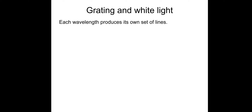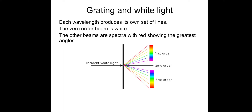What happens if we use white light instead of monochromatic? We've looked at this before for double slit diffraction. Each wavelength produces its own set of lines. The zero order beam is white, and the other beams are spectra with red showing the greatest angles. So this is another example of blue on the inside and red on the outside, similar to double slit diffraction.